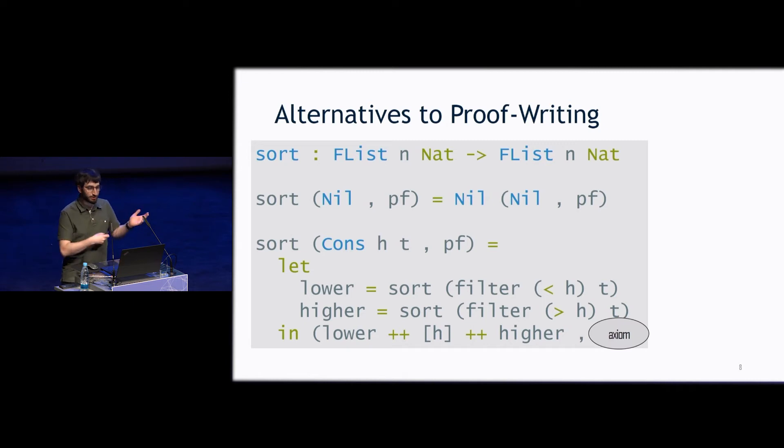Instead, we could just declare it as an axiom and say, okay, well, just suppose we have a proof of that type, and we'll just keep going. Now, this causes problems with type checking because it blocks reduction. But the worst problem is that this doesn't actually check the error. It assumes that the thing you have is correct, and if you ever use it in a bad way because reduction gets blocked, it will just happily proceed.